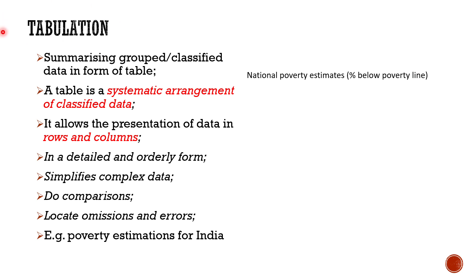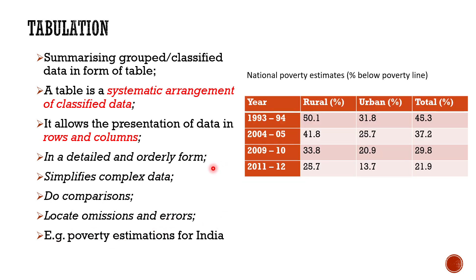After classification, the next process is tabulation, which is the key for summarizing grouped or classified data. A table is a systematic arrangement of classified data. It arranges data in rows and columns and allows meaningful presentation. It gives us detailed and orderly data, simplifies complex data, enables comparisons, and helps locate omissions and errors. For example, we can have poverty estimations for India presented in a table.